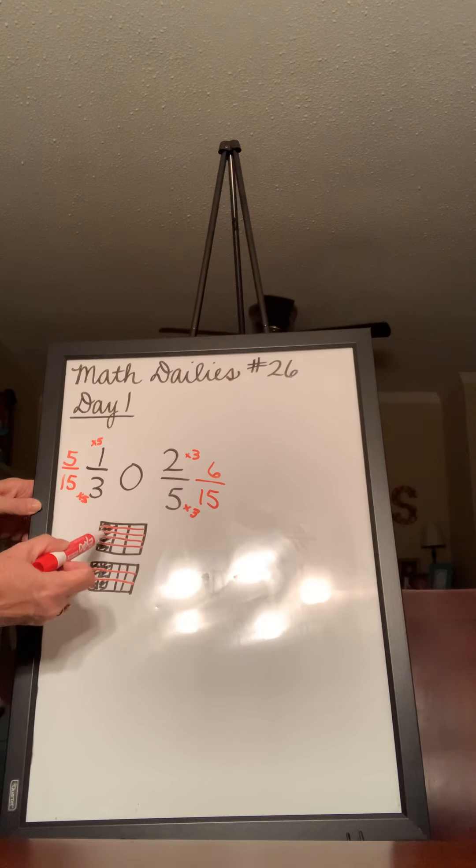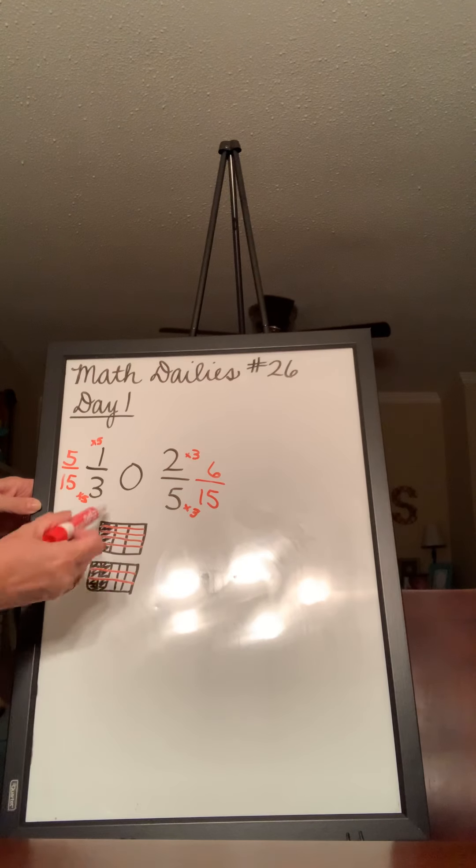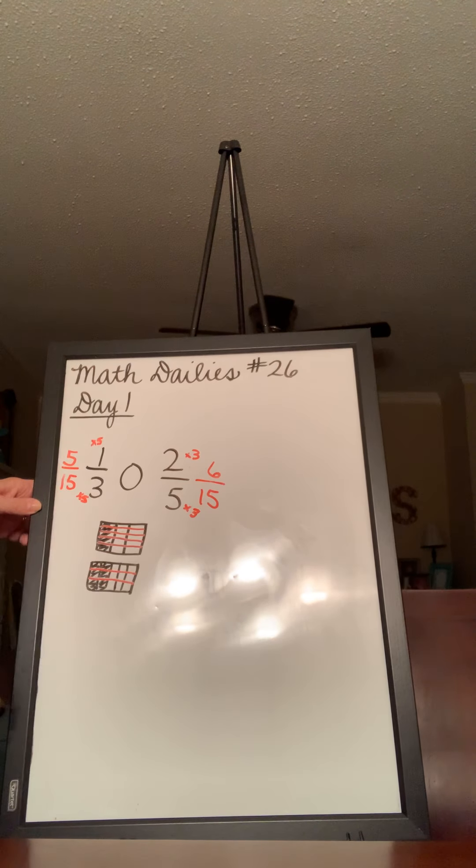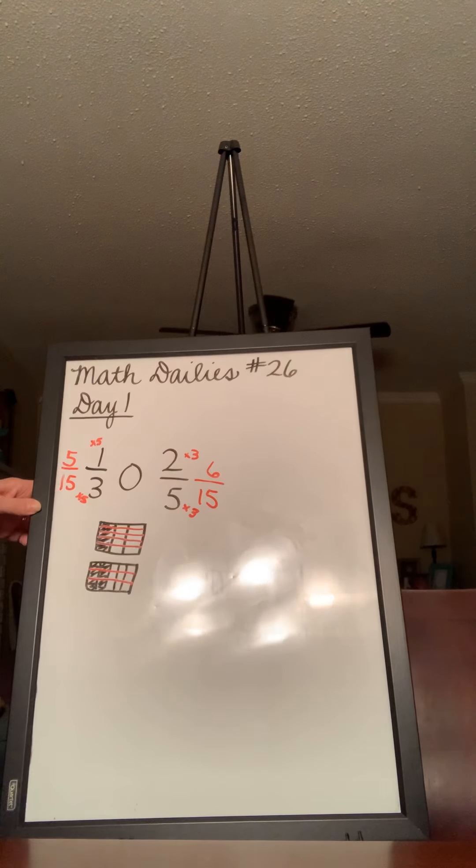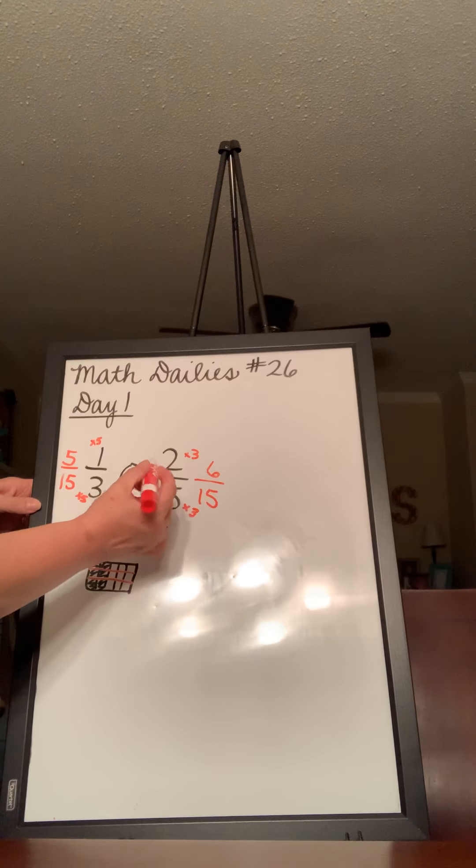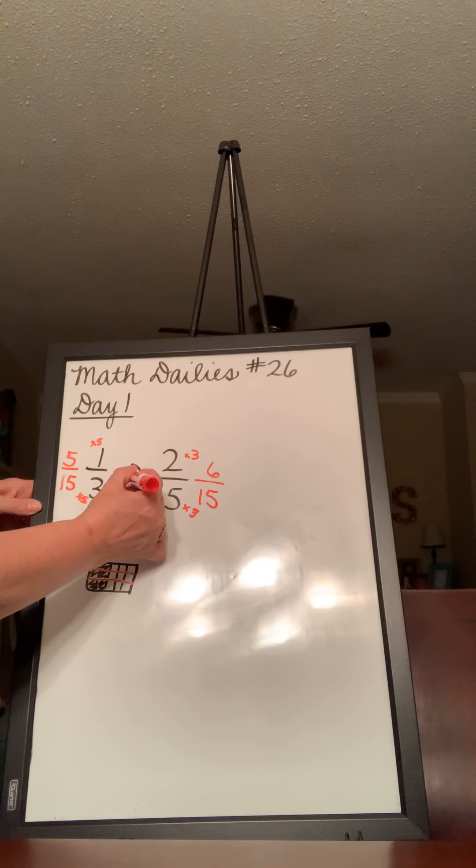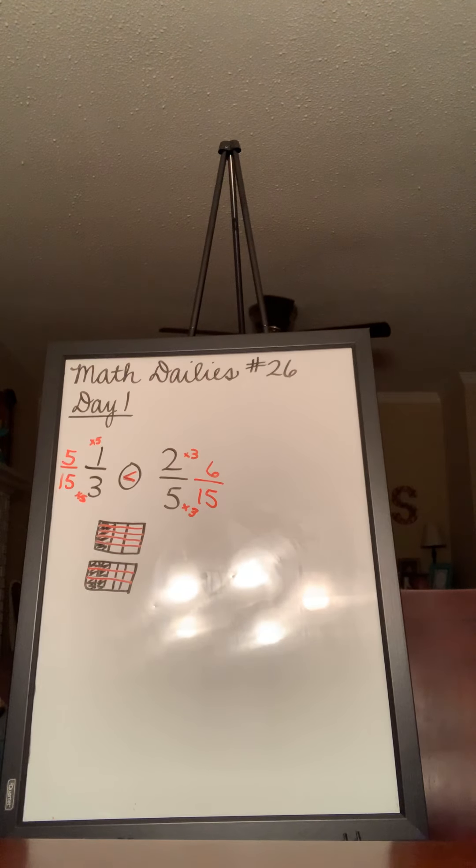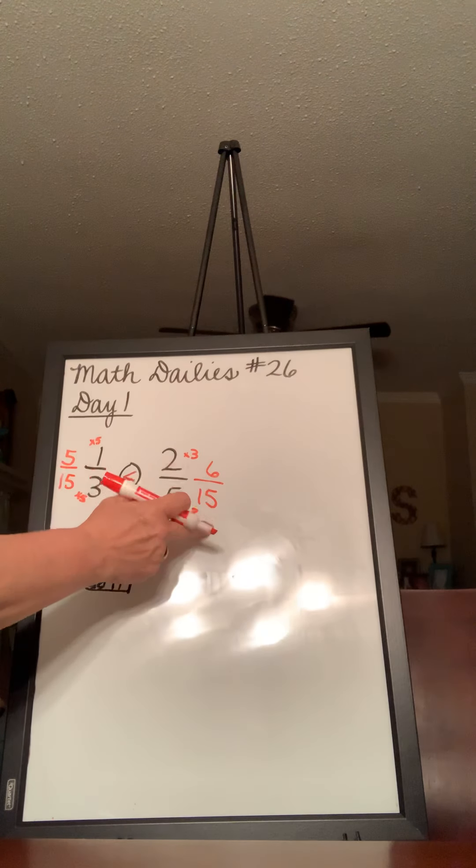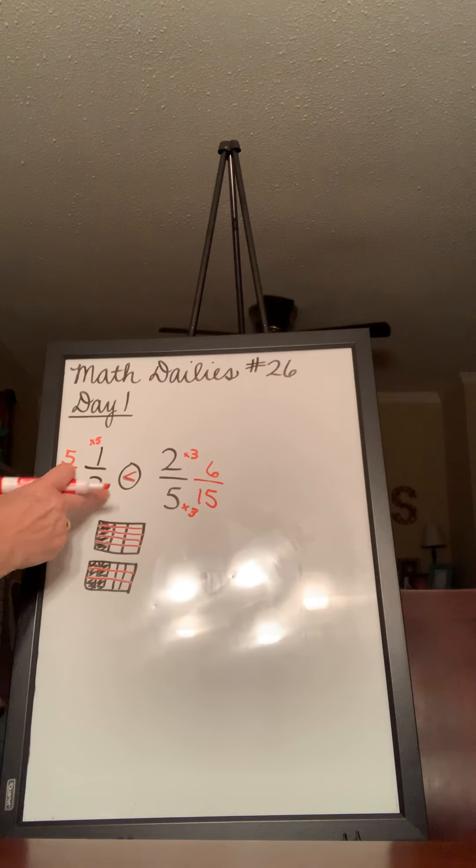And you see that 1, 2, 3, 4, 5 out of the whole 15 is the same as 1/3. So, now we can compare 5/15 and 6/15. Well, 5 is less than 6. Now, my markers are writing kind of gray, but anyway. So, 5/15 is less than 6/15. So, 1/3 is less than 2/5.